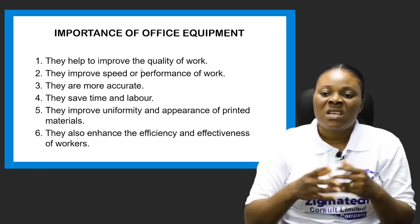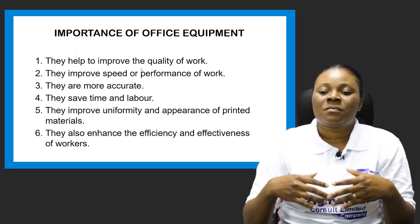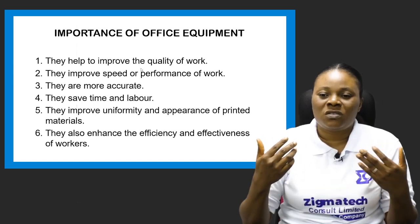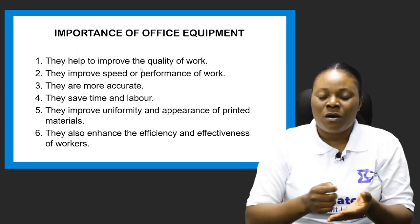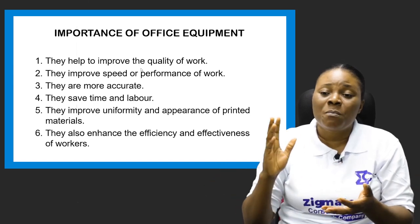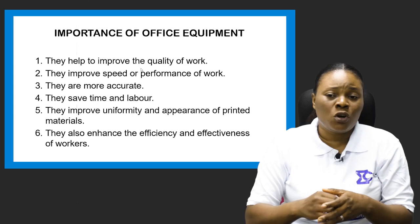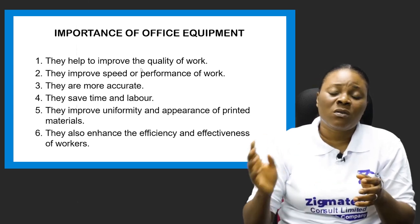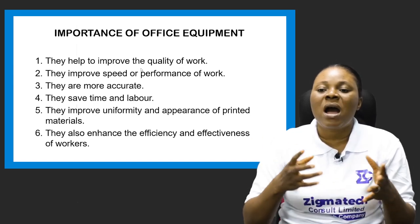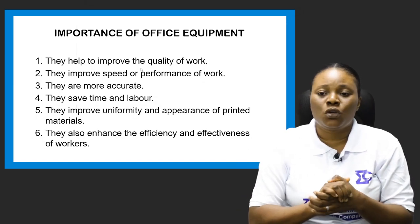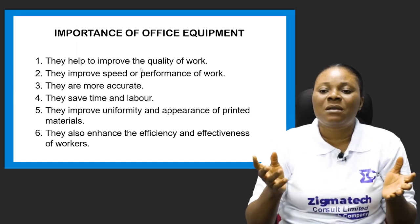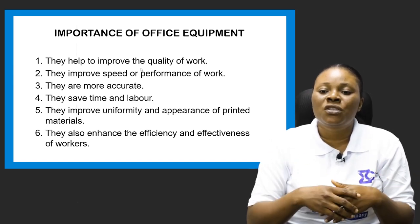Number three, office equipment is more accurate. For example, if you are an accountant and there are figures to add up, if you use just your brain and pen you might end up making a mistake. But if you use either your computer or a calculator, the calculator will give you a more accurate answer. So the equipment is there to give you more accurate answers.